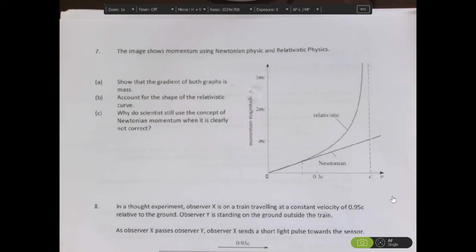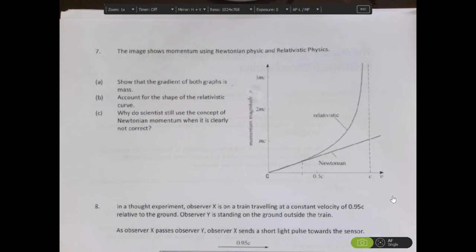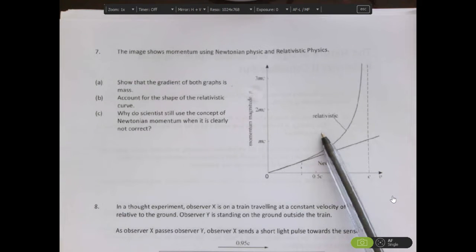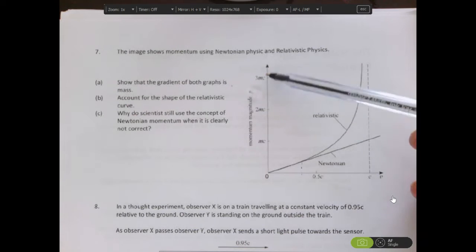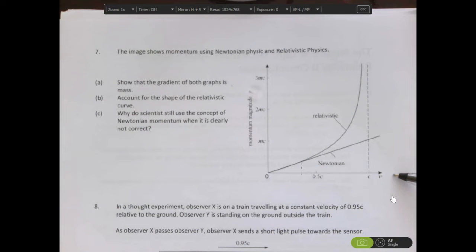The reason why I'm going to briefly look at question seven is that this is very similar to a question that you have done on a previous worksheet. What we want to look at is this graph over here where we have momentum on the vertical axis and velocity on the horizontal axis.